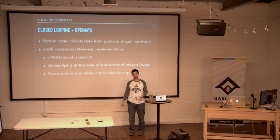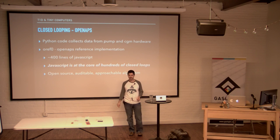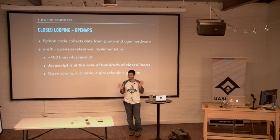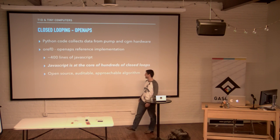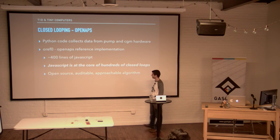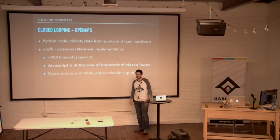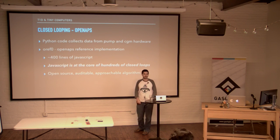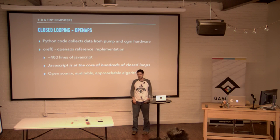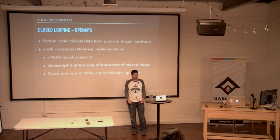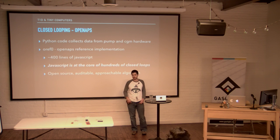When I first heard that, I was kind of scared — because it's math, and JavaScript and floating point numbers are a little scary. But it's open source, it's auditable, it's approachable. If you go look at it you can figure out what it's doing. That was the whole point — they wanted to say here's what a closed loop looks like and here's how we implement it. JavaScript is a pretty approachable language for that.